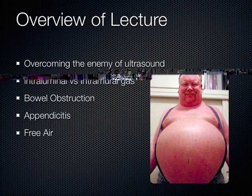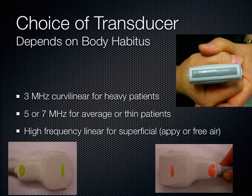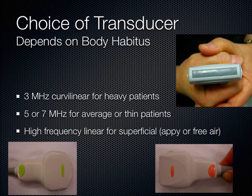To insonate the intestines, you want to use the linear probe — high frequency for superficial structures. However, you use a compression technique: push down on the abdomen with that linear probe. As you compress the abdominal wall, you decrease the effective focal point of the transducer, so structures that used to be far away are now much closer to your probe. For example, compressing 4-6 centimeters down, you can reach even deep structures like the psoas muscle.